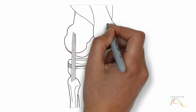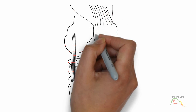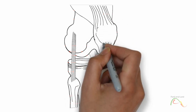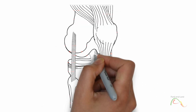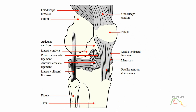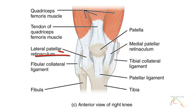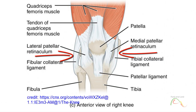The knee joint has multiple ligaments that provide support, particularly in the extended position. Located at the sides of the knee, there are two ligaments: the lateral collateral ligament and the medial collateral ligament.